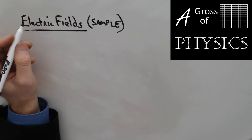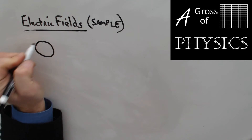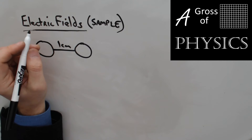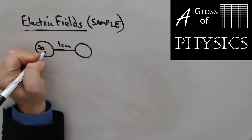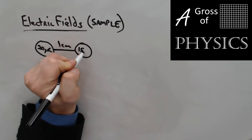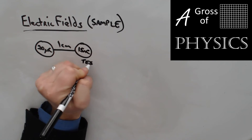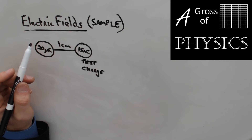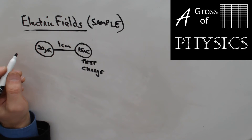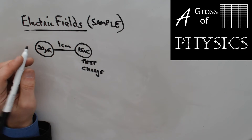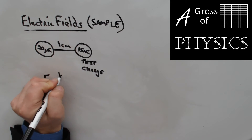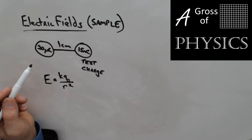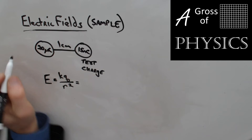Here's an electric field sample problem. We have two positive charges one centimeter apart. The first one has a charge of 20 microcoulombs. The other has a charge of 15 nanocoulombs — the 15 nanocoulombs is the test charge. We're going to figure out the field strength at the test charge. I'll use E equals KQ over R squared, and then solve it the other way using the force. Let's start with KQ over R squared, where this is the source.